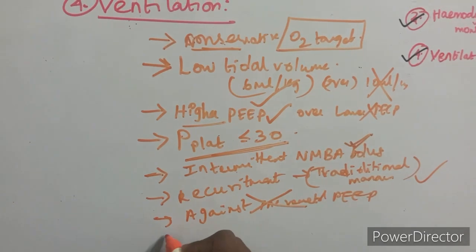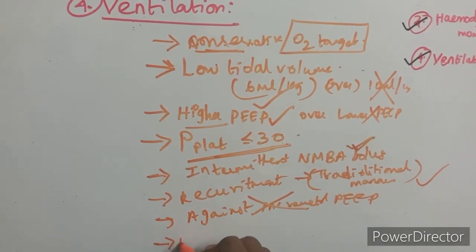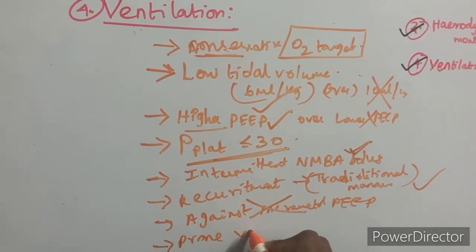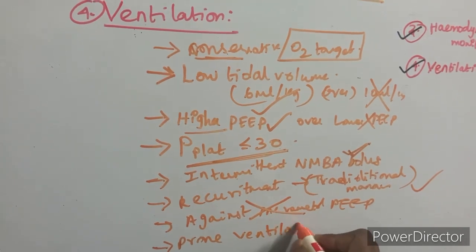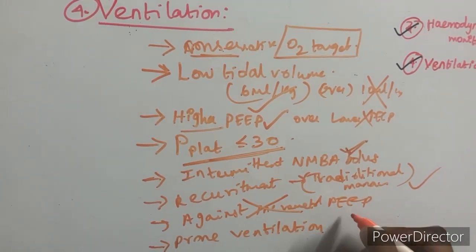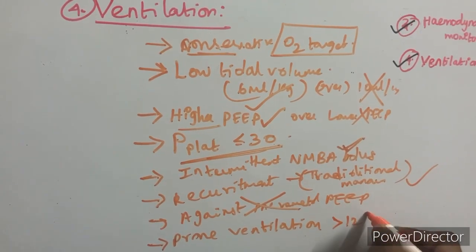Prone ventilation for more than 12 hours per day is recommended according to the Surviving Sepsis Campaign guidelines.